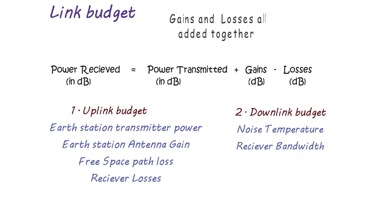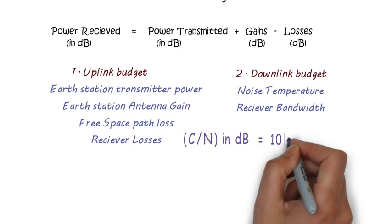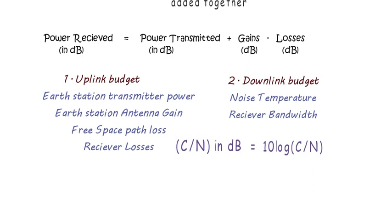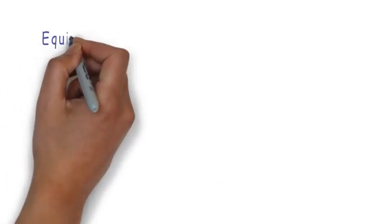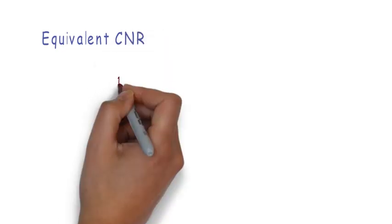These link budgets are generally expressed in terms of carrier to noise ratio in decibel, that is 10 log C divided by N, and the base of log is 10. Here is a very important formula to calculate the equivalent carrier to noise ratio, and that is 1 divided by CNR equal to 1 divided by CNR uplink plus 1 by CNR downlink.